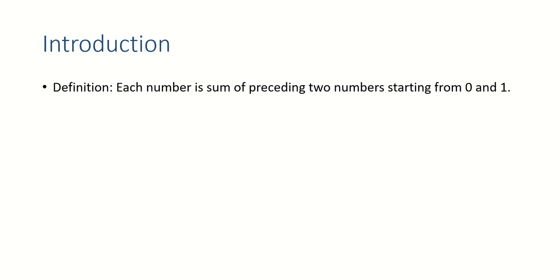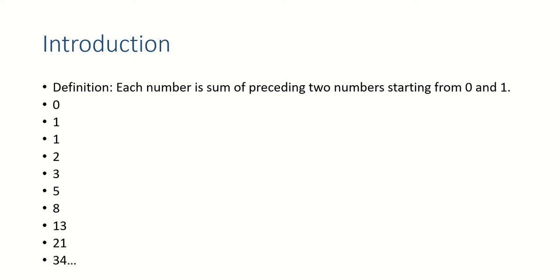What is Fibonacci series? It's a mathematical series where each number is the sum of the preceding two numbers, starting from zero and one. Our series starts with zero and one — third number is zero plus one, which is one. Then one plus one is two, one plus two is three, three plus two is five, five plus three is eight, eight plus five is thirteen, thirteen plus eight is twenty-one, twenty-one plus thirteen is thirty-four, and so on. This is the Fibonacci series and we want to print it using Python.